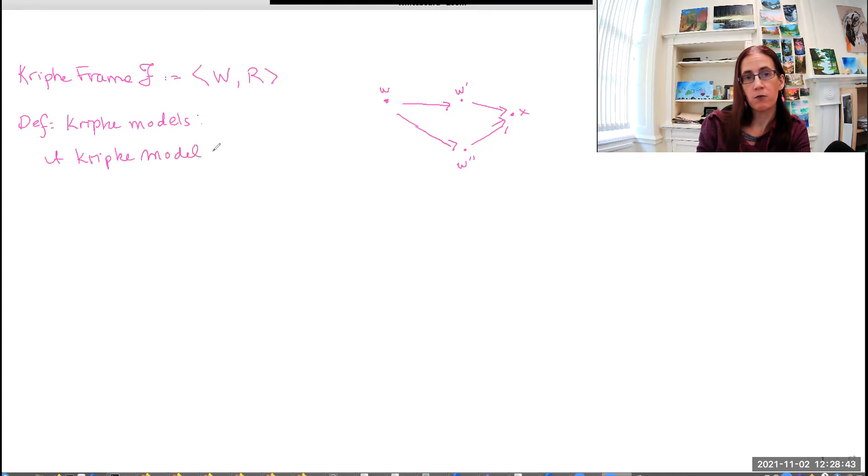So a Kripke model, and for this we will use this calligraphic M, is also going to be an ordered pair F, V, where F is a Kripke frame, and so as a result, sometimes we will say that M is the ordered triple consisting of W, R, and V, because sometimes it's useful to make this explicit.